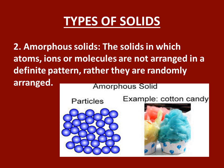The second type of solids is amorphous solids. These are the solids in which atoms, ions, or molecules are not arranged in a definite pattern; rather they are randomly arranged. For example, in cotton candy there is no specific arrangement of particles. Similarly, in rubber, plastics, and glass there is no specific arrangement of particles.